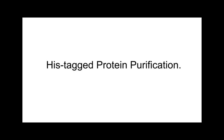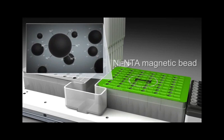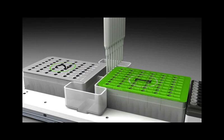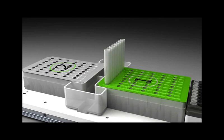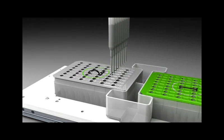Histidine-tagged protein purification follows transcription and translation. The basis for protein purification is the use of nickel NTA magnetic beads to affinity purify histidine-tagged protein. This histidine tag can be attached to either the N-terminus or the C-terminus of your protein.